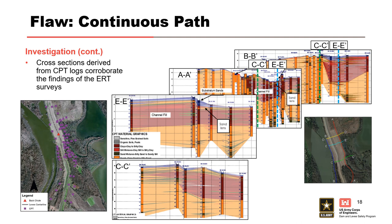Cross sections and profiles derived from CPT logs performed in 2002 and 2010 also aid in characterization of the foundation soils. Line B-B' is a profile of CPT borings along the riverside toe of the levee; Line A-A' is a profile just beyond the landside toe; and lines E-E' and C-C' are cross sections located near the observed distress in the northern area in 2011 and just north of the southern boil location from the 1990s and 2008, respectively. Together, the CPT profiles and cross sections indicate the presence of a continuous foundation sand layer at Buck Chute levee, corroborating the ERT survey findings and aligning with the understood depositional environment of the lower Mississippi River Valley.